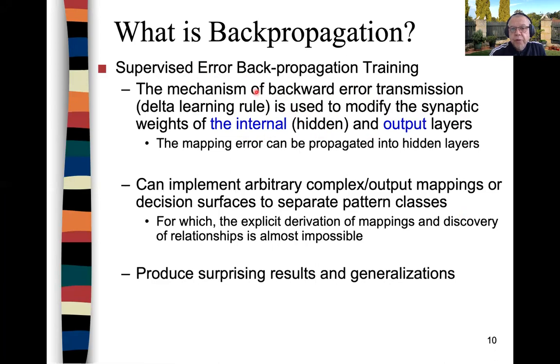Basically, you have an error function which is initially generated from the difference between the desired output and the actual output produced by the network when it receives a certain input pattern. This error is fed back and then used to modify the weights.